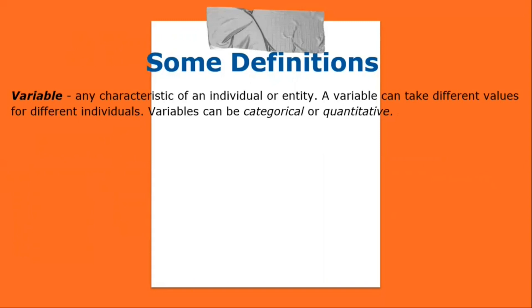Nominal: categorical variables with no inherent order or ranking sequence such as names or classes — e.g., gender. Values may be numerical but without numerical meaning — e.g., 1, 2, 3. The only operation that can be applied to nominal variables is enumeration.